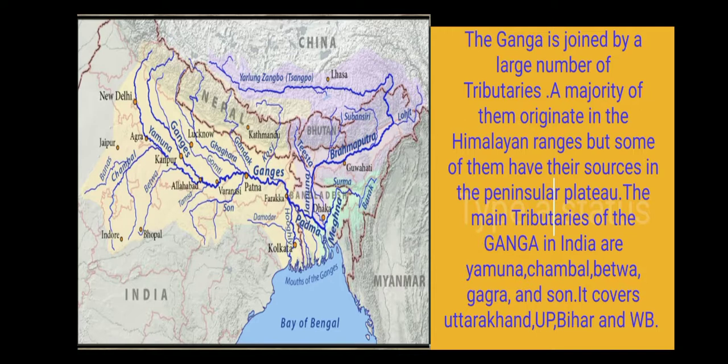The north-side tributaries of the Ganga include Ghaghra, Gandak, Kosi; and the south-side tributaries include Betwa, Chambal, and Son. The Ganga system covers Uttarakhand, Bihar, and West Bengal.